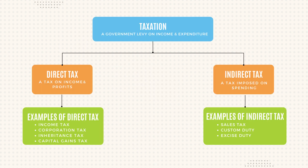Moving on to the next topic which is taxation. A tax is a government levy on income and expenditure. It is used to fund government spending and to affect the level of economic activity in the country. Taxes can be classified into direct tax and indirect tax. Direct tax is a tax on income and profits, whereas indirect tax is a tax which is imposed indirectly — it is imposed on spending. Examples of direct tax include income tax, capital gains tax, corporate tax, inheritance tax and windfall tax.